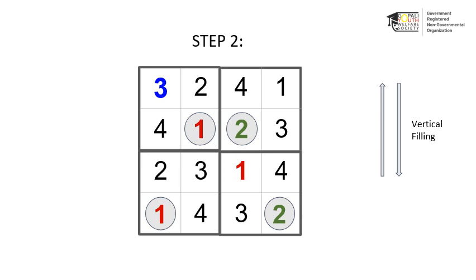In the second column, also the number 1 is missing and the second square is empty. So, we fill the second square with number 1. In the third and fourth columns, the number 2 is missing and the second and fourth squares are empty respectively. So, we fill number 2 in the empty squares in the third and fourth columns.